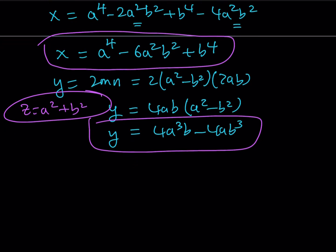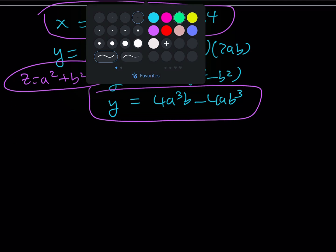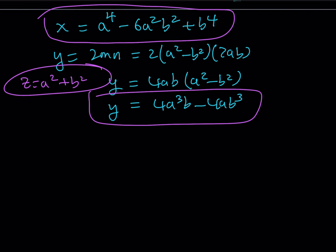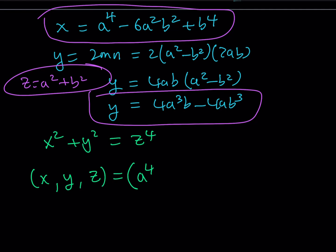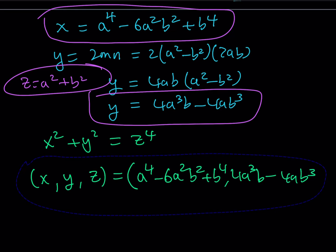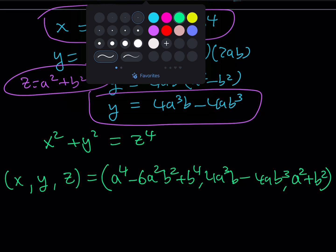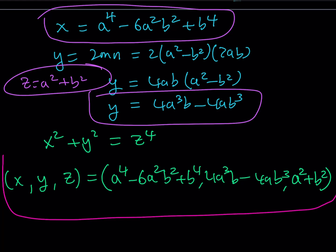Let's put these three together and write our answer as an ordered triple. The original equation is x squared plus y squared equals z to the fourth. The solutions are: x equals a⁴ minus 6a²b² plus b⁴, y equals 4a³b minus 4ab³, and z equals a squared plus b squared. That's all the solutions we're finding here, and this brings us to the end of the video.